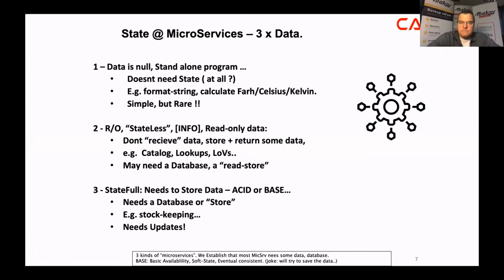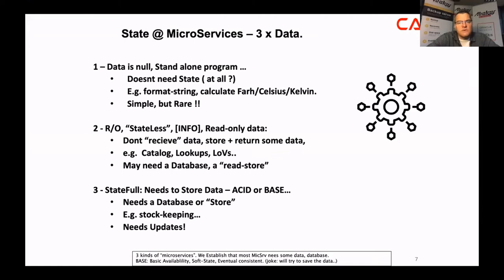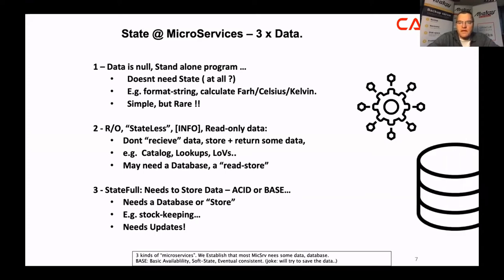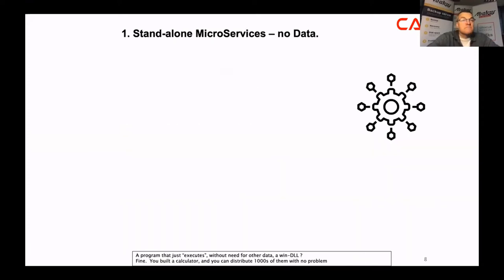And then there is the difficult one: the stateful microservice. You do a transaction — you sell a product, you need to decrease the stock by one. If you try to decrease the stock multiple times by error, you might empty your stock with nothing sold. A database that needs to keep track of something important needs to be ACID — atomic, consistent, isolated, durable — not just BASE. You need a proper store and update mechanism.